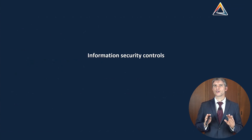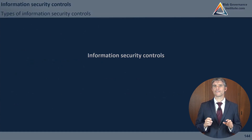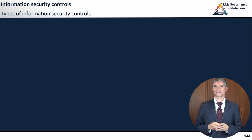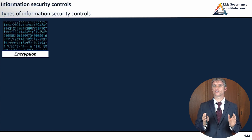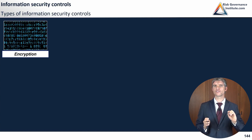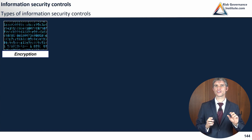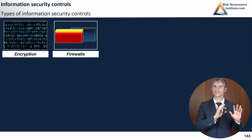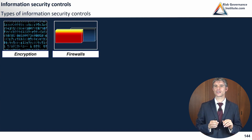Information security controls. We're going to look at the different types of information security controls. We'll start with encryption — just noting it as a type of information security control for now, going into more detail later. The same goes for firewalls. You should know at this point that these are types of information security controls.